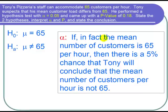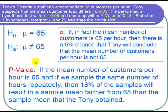So now let's talk about the p-value. The p-value is the probability of getting as rare an event as we got in our survey or rarer. In particular, we always say that if H naught is true, how likely is it that we get such a rare event. So we can say if the mean number of customers per hour is 65 and if we sample the same number of hours repeatedly, then 18% of the samples will result in a sample mean farther from 65 than the sample mean that Tony obtained.